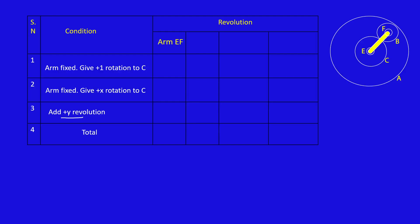First column is arm, which is EF. Second column, we are giving plus 1 rotation to C. Then C is connected with B, because the outer of C is connected with outer of B. Then B is connected with A. So after B, A will come. Arm fixed, so first 0. We are giving plus 1 rotation to C, so plus 1.